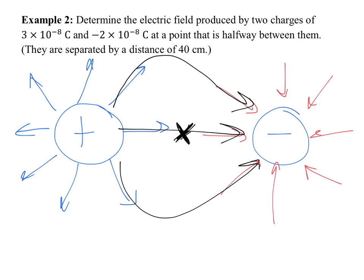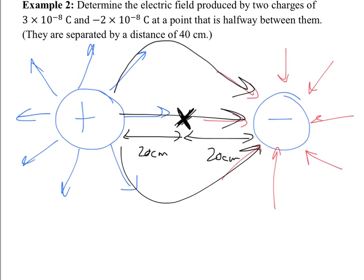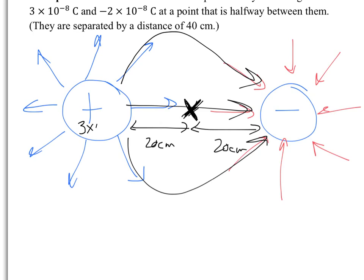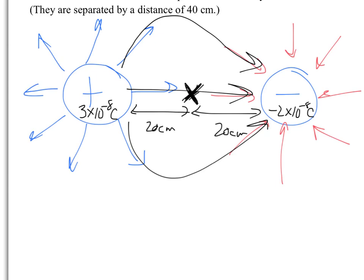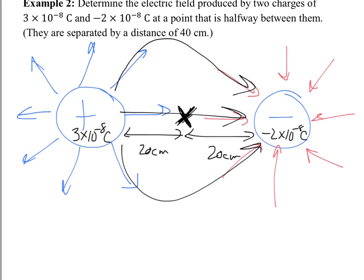You're going to have to calculate this twice — once for each source. It happens to be halfway between them here. If it wasn't, you would just use r₁ for the first one and r₂ for the second one, whatever those distances are. Right now, they're separated by 40 centimeters total, so each half is 20 centimeters. The r value for each will be 0.2 meters. This charge Q₁ is 3×10⁻⁸ coulombs, and Q₂ is −2×10⁻⁸ coulombs.